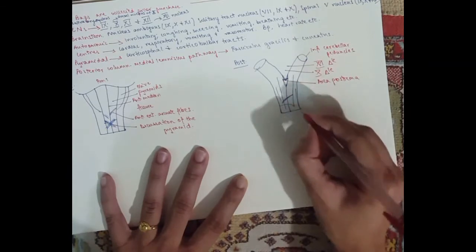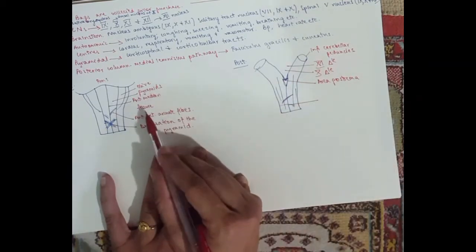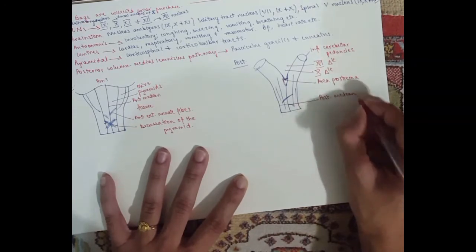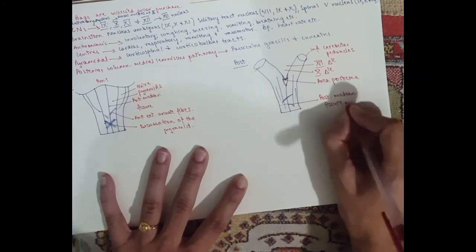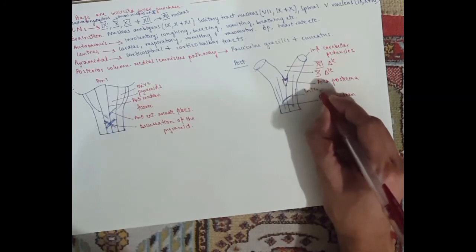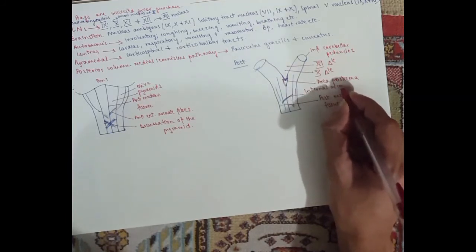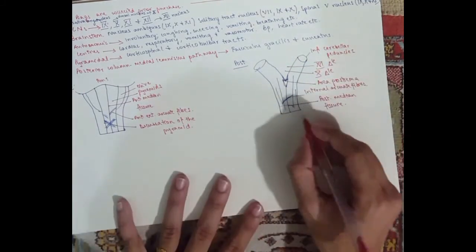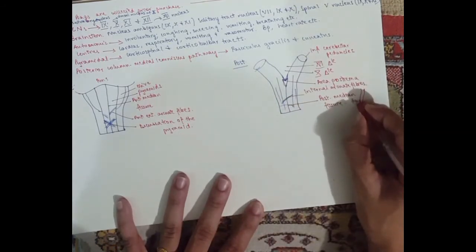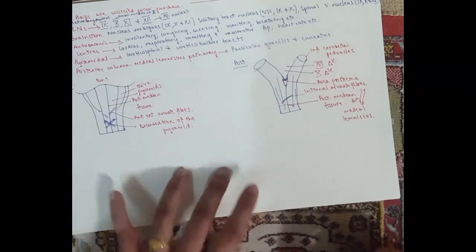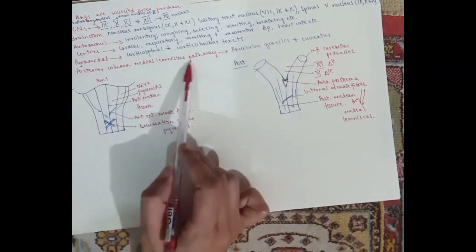This middle line here, if this was the anterior median fissure, this would be the posterior one: posterior median fissure or sulcus. The fibers running here are called the internal arcuate fibers, and they decussate from one side of the medulla to the other to form the medial lemniscus. That's why it's called the posterior column medial lemniscus pathway.